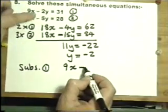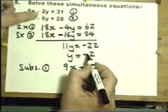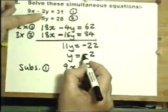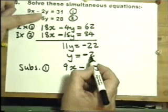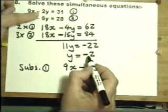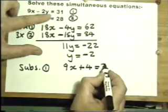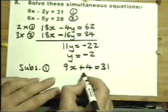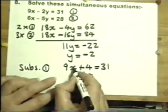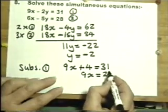9x minus 2y. Now again, let's be so careful with these minuses. Minus 2y when y itself is minus 2 is minus 2 minus 2s, which is plus 4 equals 31. The examiner's not been too generous with the signs on this one. Really keep you on your toes. Take 4 from that side. Take 4 from 31 will give you 27.